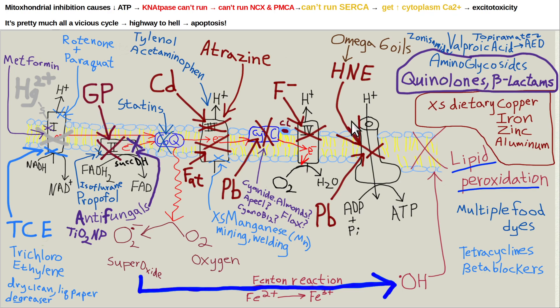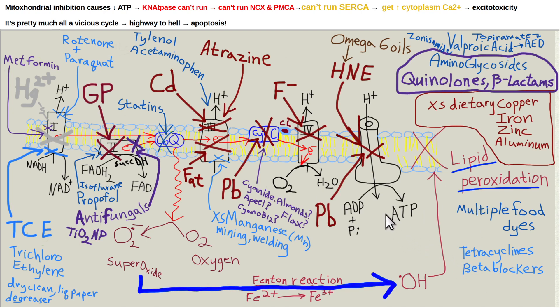People are getting nickel-and-dimed to death because all these things are adding up. So avoid them as much as you can. Filter your water with reverse osmosis or distillation, or move somewhere without fluoride in the water. Eat organic to avoid atrazine and glyphosate. Fix your cholesterol through diet so you don't need statins. Don't eat anything with high fructose corn syrup, avoid processed foods with all their preservatives, and avoid polypharmacy if you can.